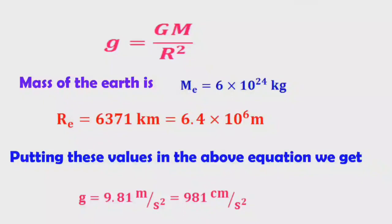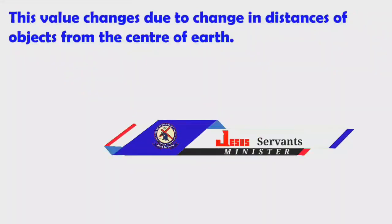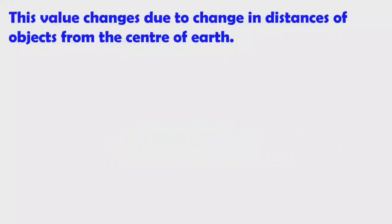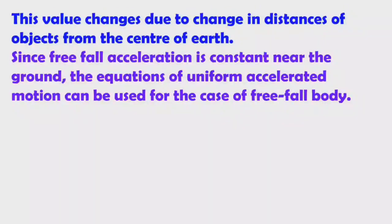Remember the value of small g — this is very important. This value changes due to change in distance of the object from the center of the earth. Small g is inversely proportional to R square, since small g equals G M by R square. If the distance of the object from the center of the earth changes, the small g value will change. Since free fall acceleration is constant near the ground, R is constant and so free fall acceleration is also constant.